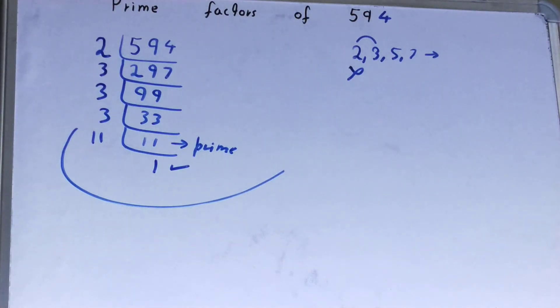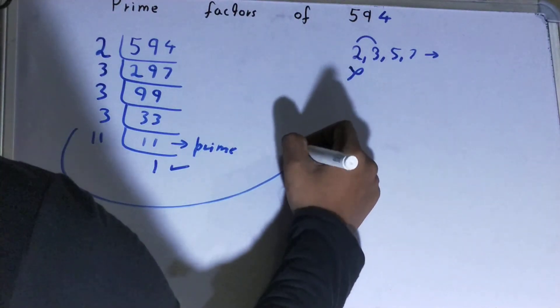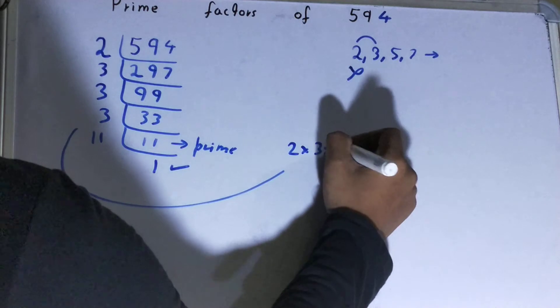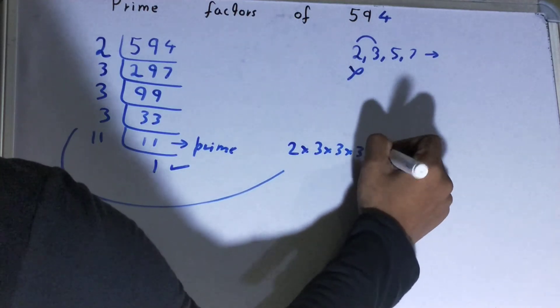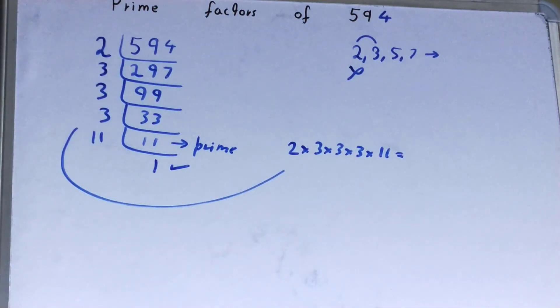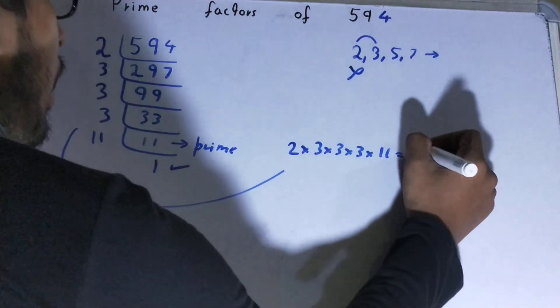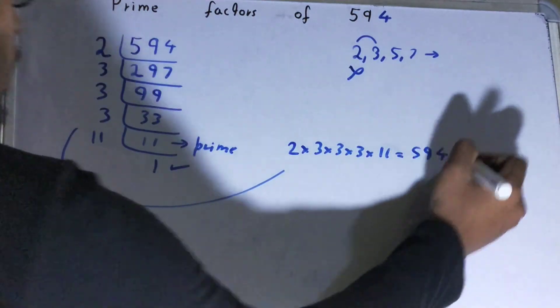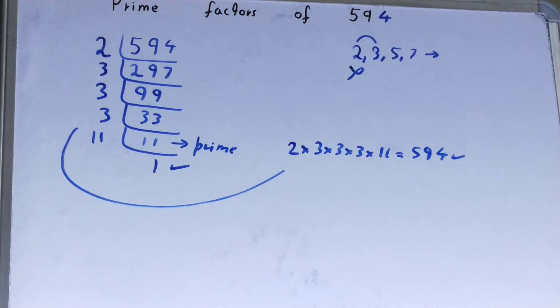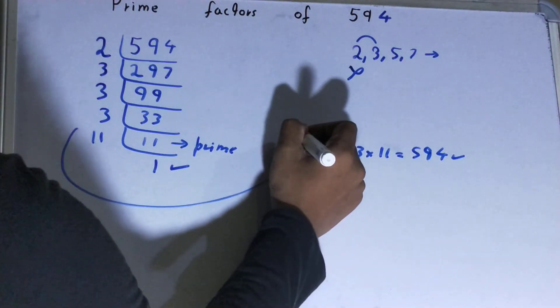The prime factors of 594 are 2 × 3 × 3 × 3 × 11. Now, if you want to check whether it is right or not, you can multiply them. If you get the number back again, your calculation is correct. If not, you need to recheck.